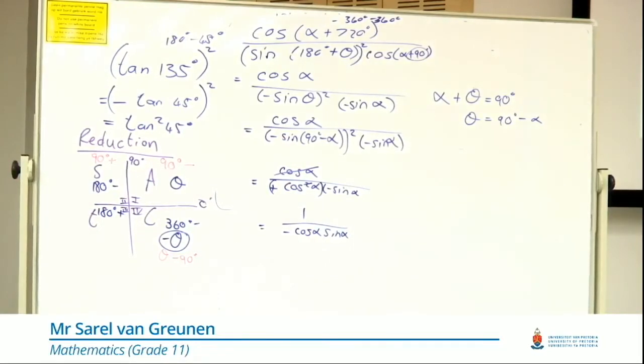Everyone's alright with one over negative cos alpha sin alpha. Now I know it freaks some of, especially some of you guys out who feel like, but sir, we only need one, can't we simplify that further?